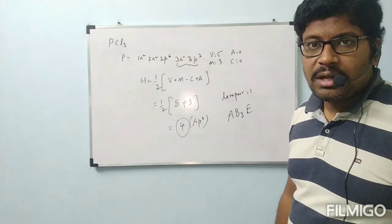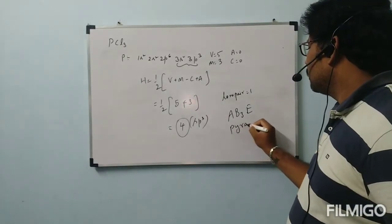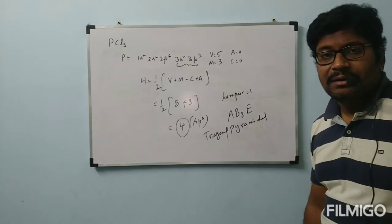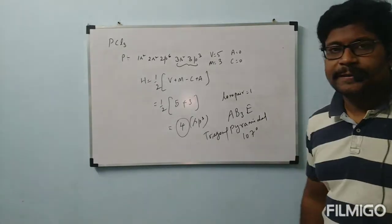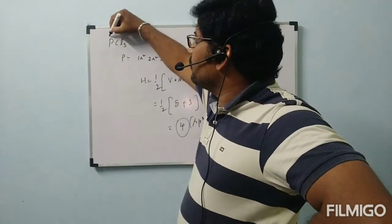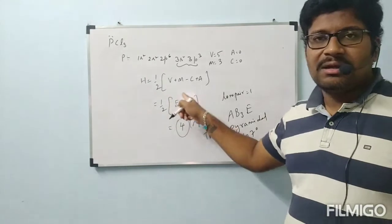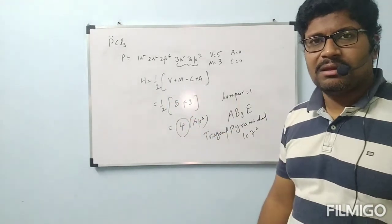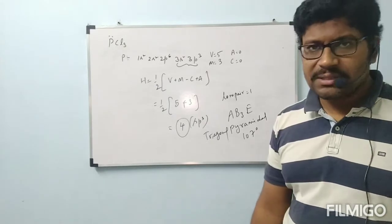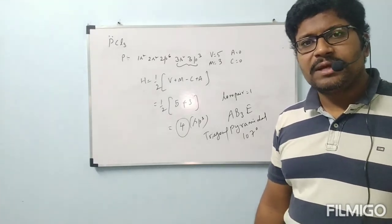With one lone pair and three bond pairs, the model is AB3E. From the tabular column, the shape is trigonal pyramidal and the bond angle is 107°. The lone pair on phosphorus is not mentioned in the molecular formula, which is why knowing this formula is so useful for determining structure.